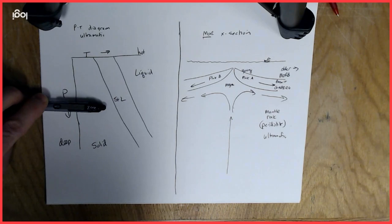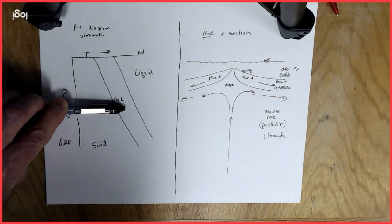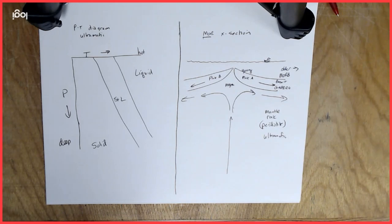So that means for any given pressure it could be solid at low temperatures, at higher temperatures will be partly solid, partly liquid, and at higher temperatures yet it will be all liquid.